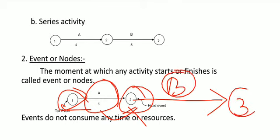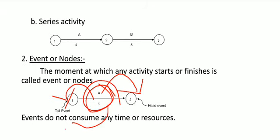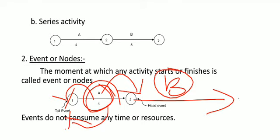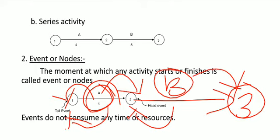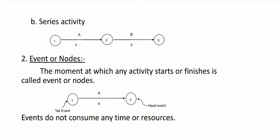Activity start is tail node and tail event, and activity end is head node and head event. Events do not consume any time or resources.